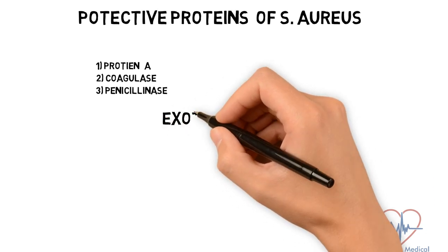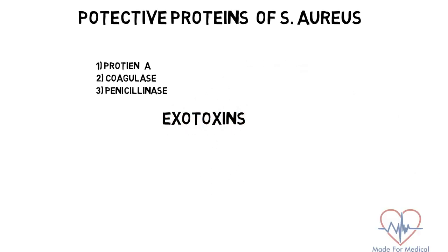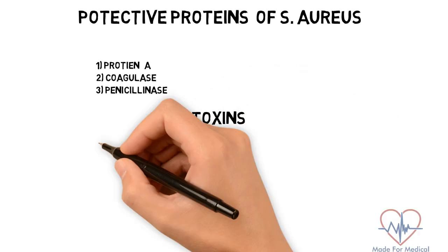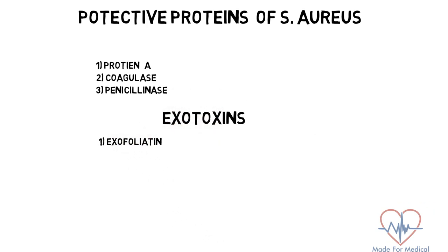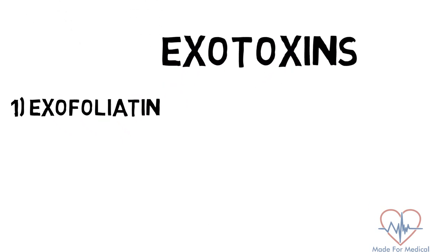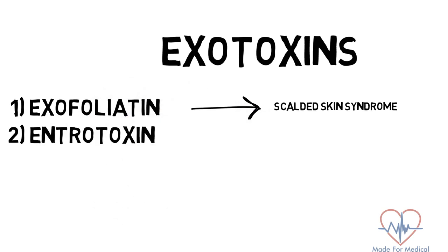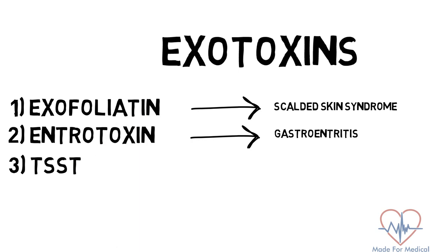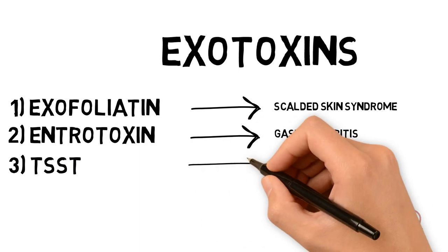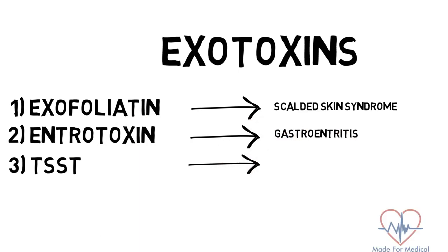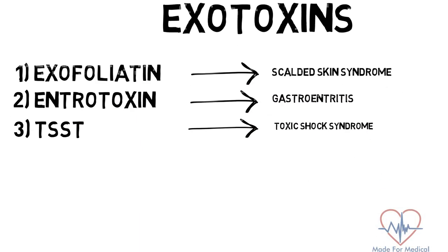Now let's talk about the toxins they produce to cause diseases. These include exfoliatin, which causes scalded skin syndrome; enterotoxin, which causes gastroenteritis; and the toxic shock syndrome toxin, which causes toxic shock syndrome.